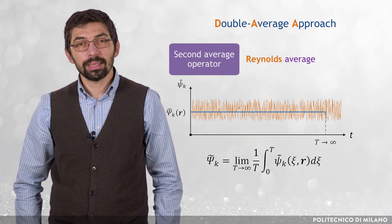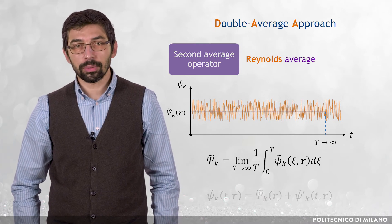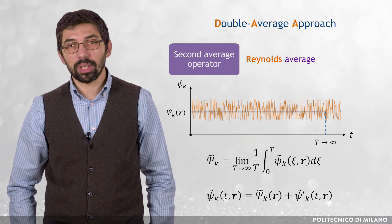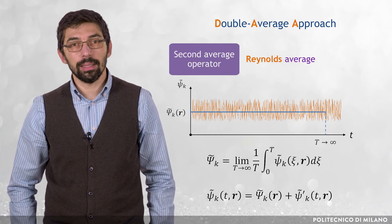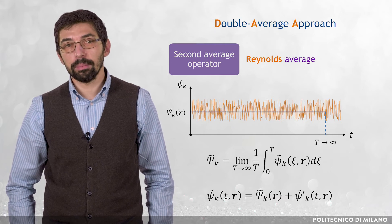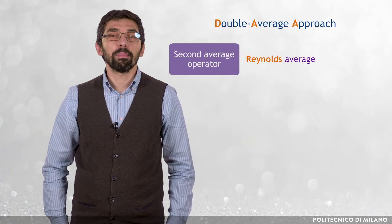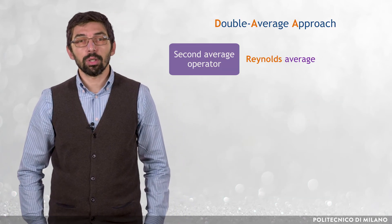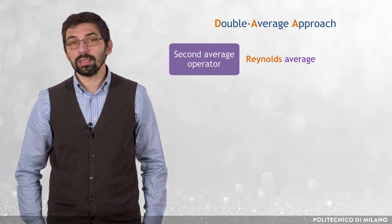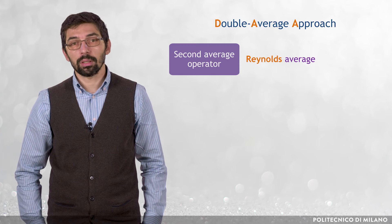As already discussed when talking about the RANS approach for single-phase flows, tilde psi k function of t and r can be expressed as the sum of capital tilde psi k function of r plus the fluctuation tilde psi k prime function of t and r. If you apply a Reynolds average to the volume-average equations, several correlations between the fluctuating components arise, and their modeling requires additional closure equations.